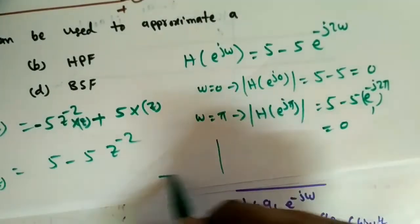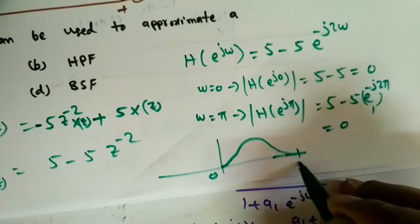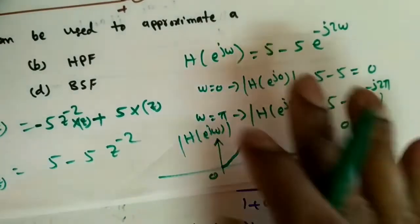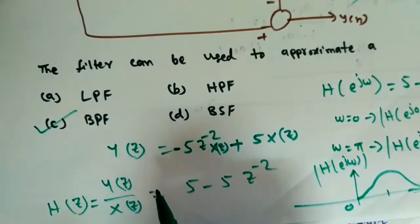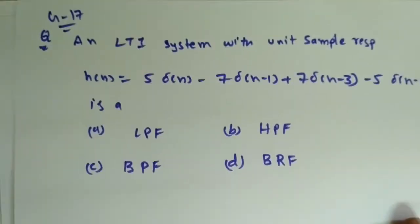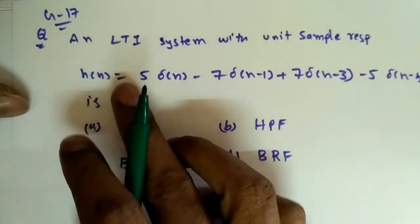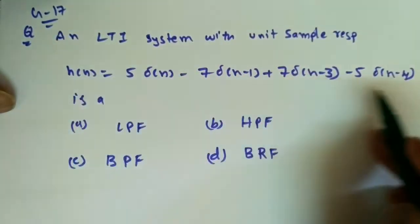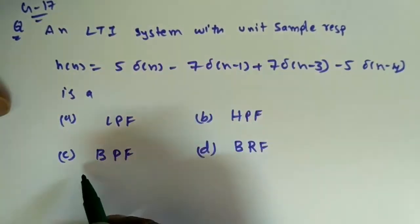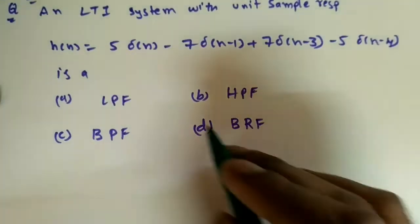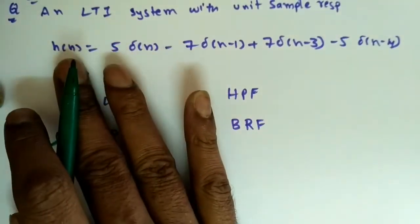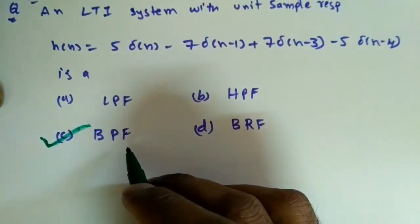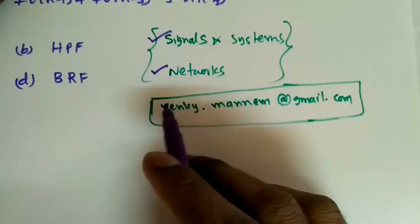At both ω=0 and ω=π the magnitude is 0, so the response peaks in between — this is a band-pass filter. The correct answer is band-pass. The next question from GATE asks about an LTI system whose unit sample response h(n) is given, and we must identify the filter type. Try this on your own: find H(z), substitute z=e^(jω), evaluate at ω=0 and ω=π, and you will get a band-pass filter.